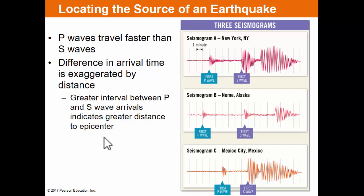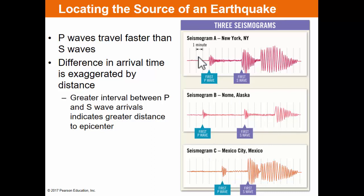P waves travel faster than S waves, and the difference in time is exaggerated by distance. For example, the time interval between P and S waves is larger at Alaska than at New York, and smaller at Mexico City. You can use these time intervals to judge the distance from each city to the epicenter. When you know the distance from Mexico City, Nome Alaska, and New York to the epicenter, you draw circles centered on each city with the distance as the radius. Where those three circles intersect is the epicenter of the earthquake.